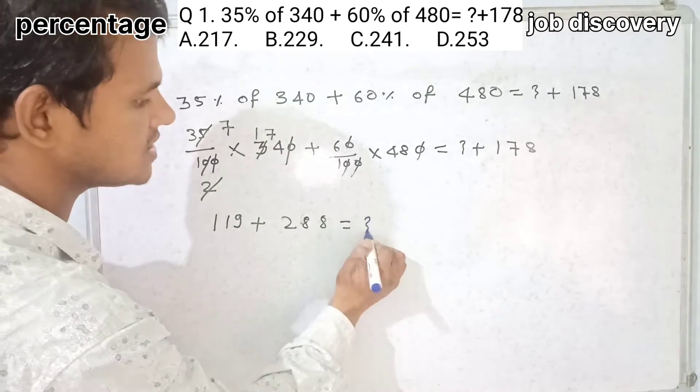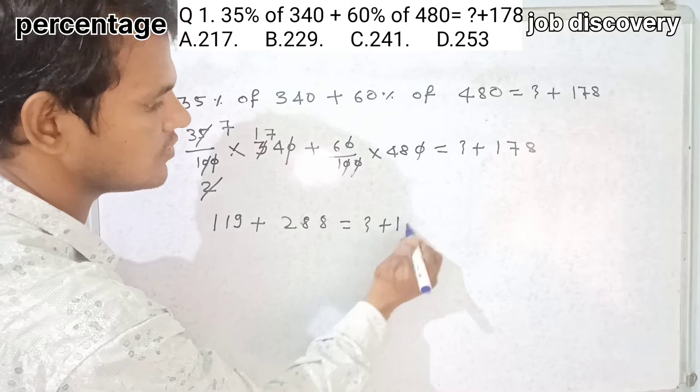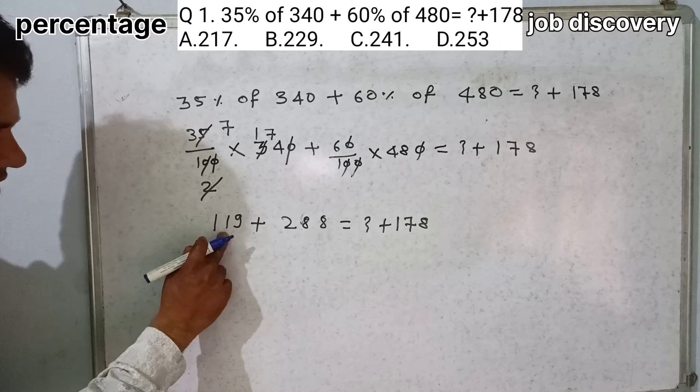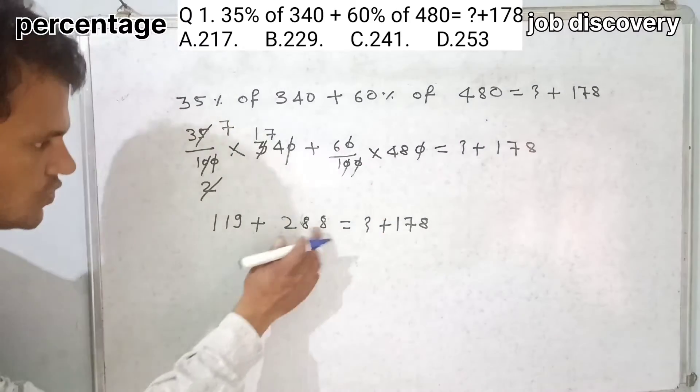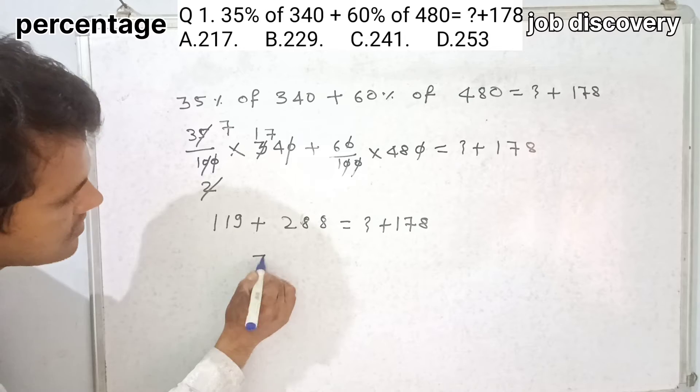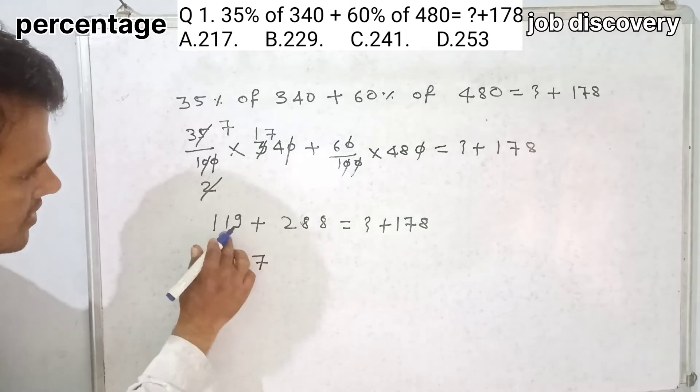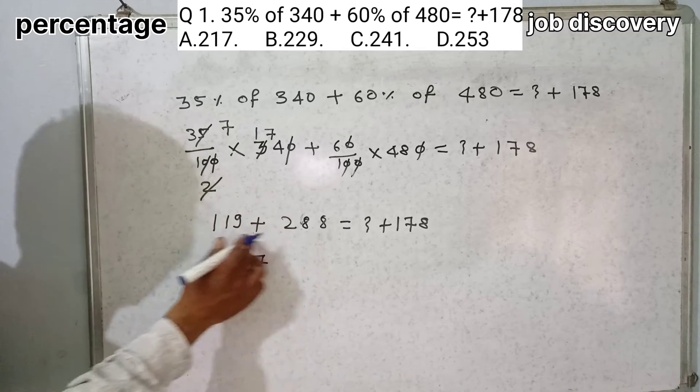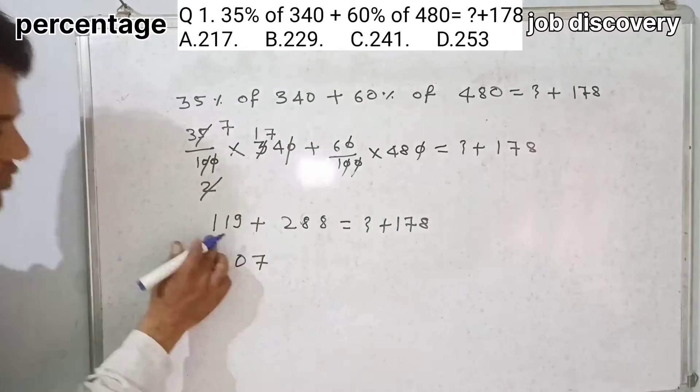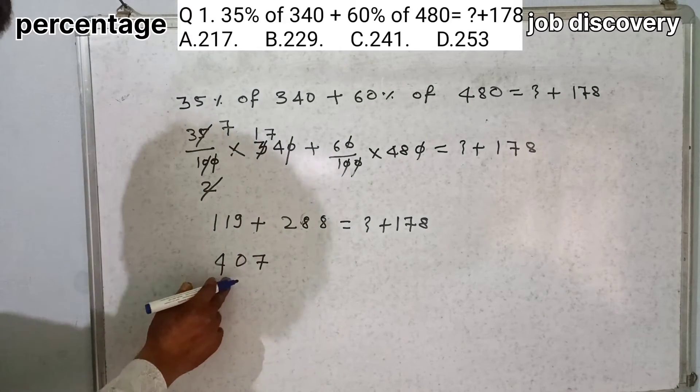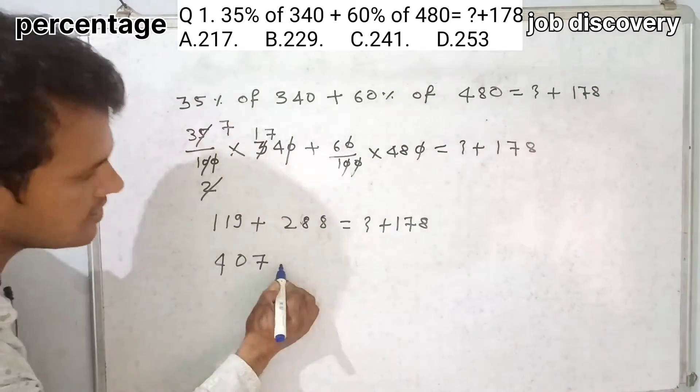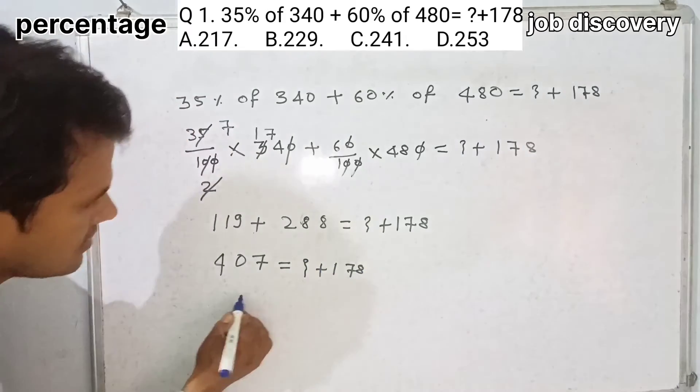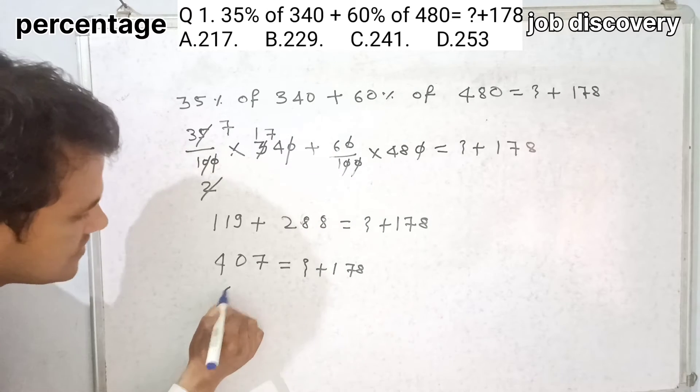Is equal to question mark plus 178. Now see here friends, 119 plus 288. So 8 plus 9 will be 17, 8 plus 1 is 0, 2, 1, 0, 2, 1, 3, 3 and 1, 4. So 119 plus 288 is 407 is equal to question mark plus 178.